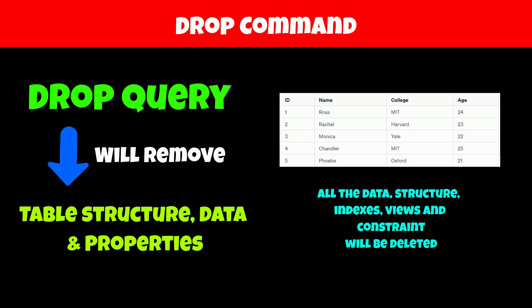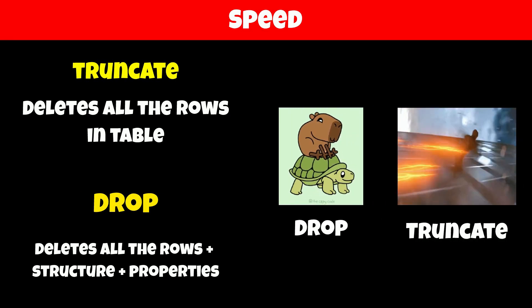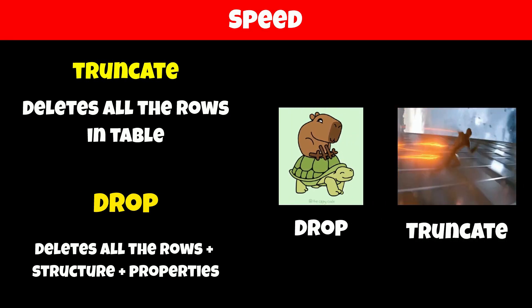Now which one is faster — TRUNCATE or DROP? The TRUNCATE command only deletes the table data, but the DROP command deletes its structure along with the data and properties, meaning it performs some additional operations along with deleting the data. That's why the TRUNCATE command is faster than the DROP command.